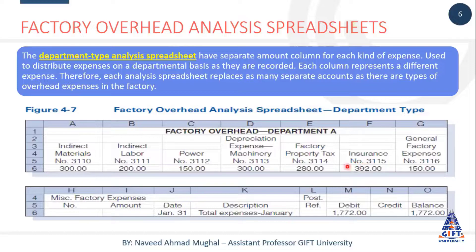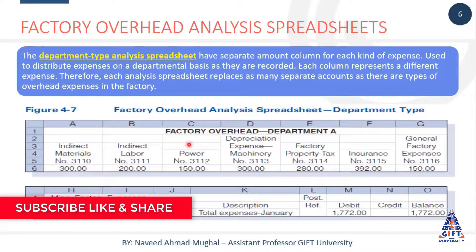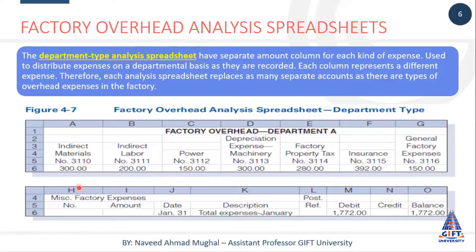Toh department A ki sheet hai, phir department B ki sheet hai, phir department C ki sheet hai, phir department D ki sheet hai. Toh jitne departments honge utni yeh sheets ban jayengi. Aur uske andar hum jo columns banayenge, woh har expense ka column banayenge. When there is an expense related to any department, we create that column in that department. Jo journal columns hote hain jaise indirect materials, indirect labor, depreciation expense machinery, factory property taxes, insurance, aur general factory expenses ka column ho sakta hai.